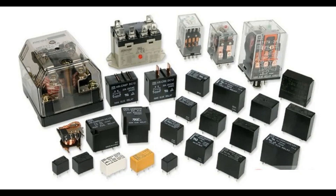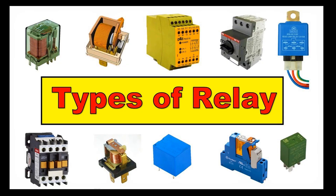The Buchholz relay is an essential device in transformer protection, known for its ability to provide both early warning of minor issues and rapid response to critical faults. Its reliability and capacity to prevent severe transformer damage make it indispensable in the power industry, where it helps ensure the stability and longevity of key equipment. An overcurrent relay is a protective relay that operates when the current flowing through a circuit exceeds a preset level, indicating a fault condition like a short circuit or overload. It's commonly used in power systems to protect lines, transformers, and other equipment by quickly disconnecting the faulted section to prevent damage.